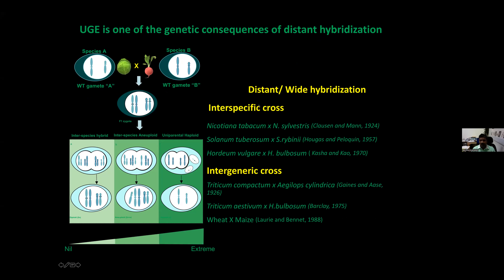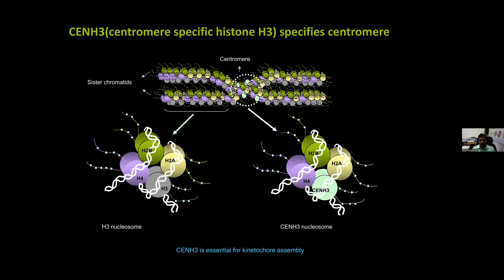Haploids are produced mostly by in vitro methods, primarily anther or microspore culture — pioneered by Guha and Maheshwari from the University of Delhi. Since their discovery, this method has been standardized across several crop species, but the disadvantages include no uniform protocol, complete species and genotype dependence, and requirement for tissue culture expertise. The least exploited methods are in vivo approaches, including parthenogenesis, androgenesis, haploid-inducing genes, and selective elimination of one parental chromosome after successful fertilization — the latter being limited to a few species, mostly grasses, with unknown molecular basis.